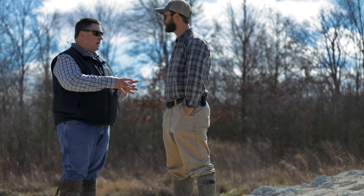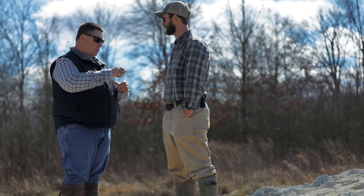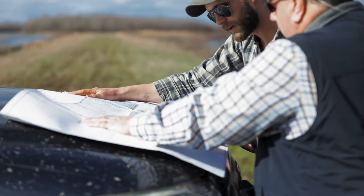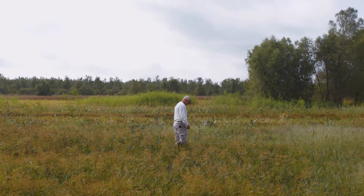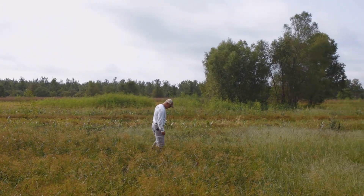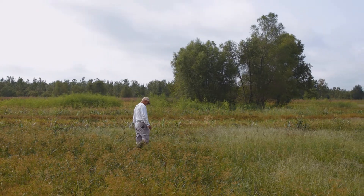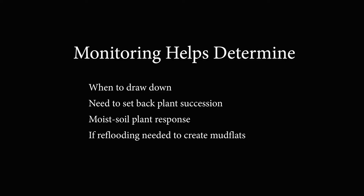Proper planning and management are necessary for successful moist soil impoundments. Each year, habitat conditions must be assessed at the end of winter and regularly throughout the growing season. Monitoring helps determine when to initiate a drawdown, whether plant succession needs to be set back, how well moist soil plants are responding to a management action, and whether reflooding is needed to create desirable mudflat conditions.